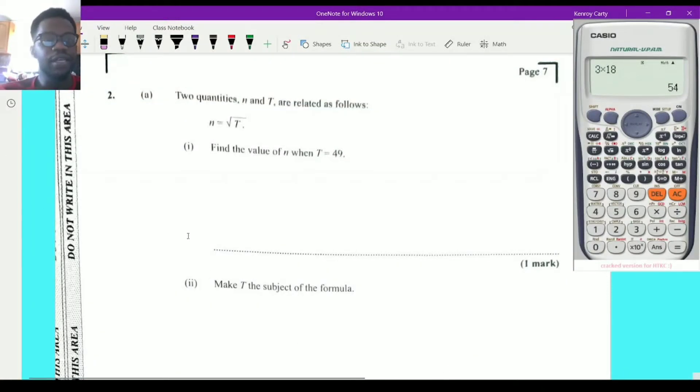Alright, without further ado, let's get right into question 2. Now, question 2 says, and the paper is a bit pale here so I'm going to be reading. Two quantities, n and t, are related as n is equal to the square root of t.